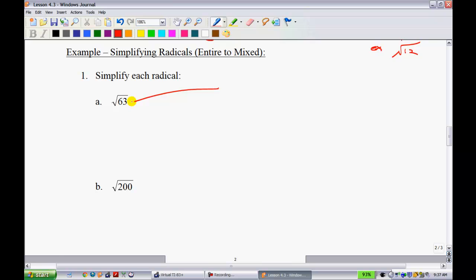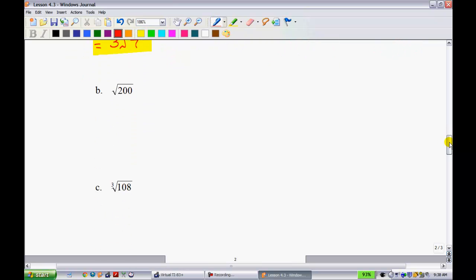Simplifying radicals, entire to mixed. We're going to look for perfect square divisors of 63. We can say that the square root of 63 is equal to the square root of 9 times the square root of 7. We know that the square root of 9 is 3, so we can simplify this. Your final answer is 3 root 7. If you put both into your calculator, you would find out they're exactly the same.